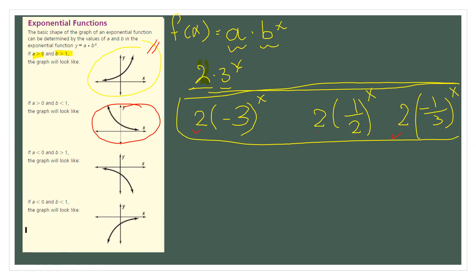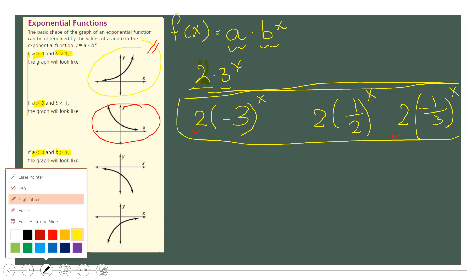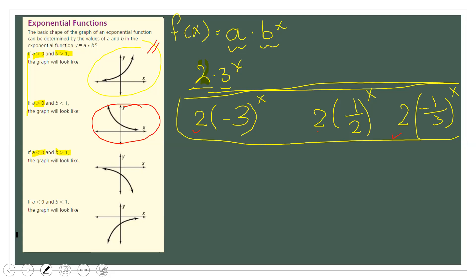For the third case, if a is now less than zero and B is greater than one — for example, negative 3 times 4 raised to x, or negative 1 times 3 raised to x — the graph will look like this.